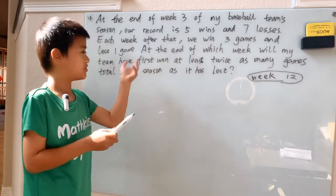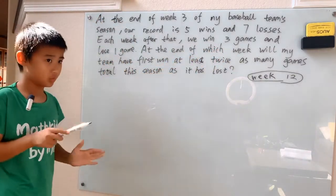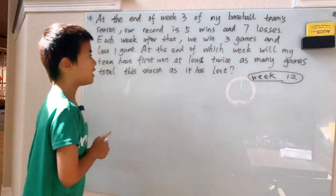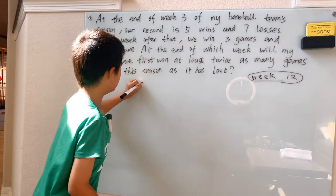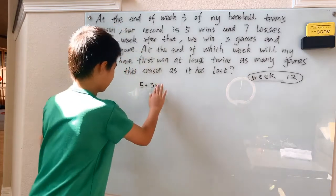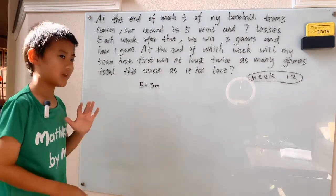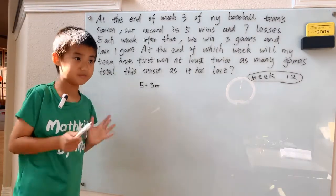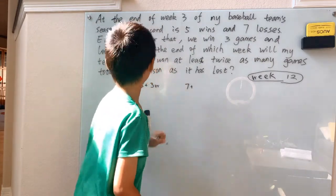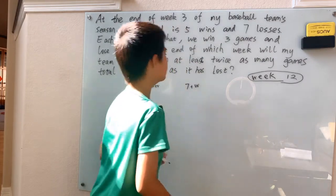Each week after week three — that's exactly what w is — we win three games and lose one game. So over w weeks we win 3w games and lose w games. The total number of wins is our original five wins plus 3w. The total number of losses is our original seven losses plus w.